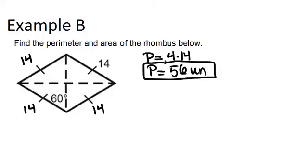For the area, we need to know the length of the diagonals, which are not given to us. But we do have this 60 degree angle, and we also have the knowledge that all four of the angles in the middle are right angles, because the diagonals of our rhombus are perpendicular. That means this is a 30-60-90 triangle, and we know the length of the hypotenuse.